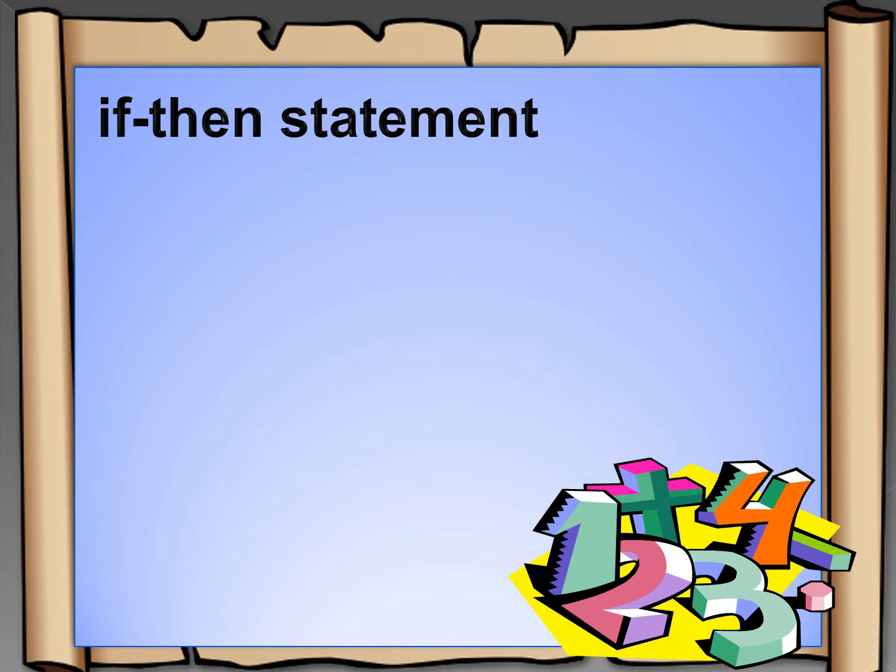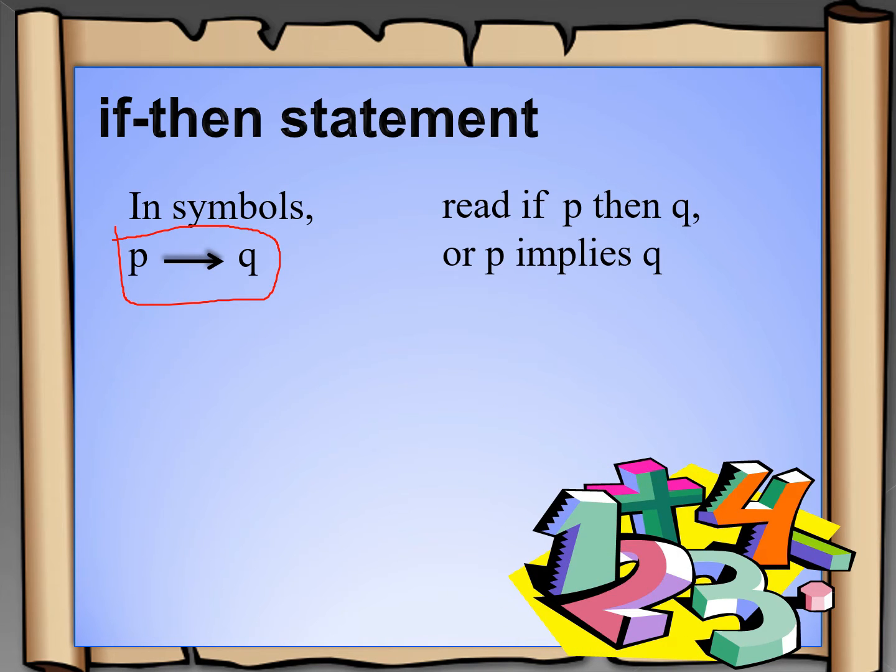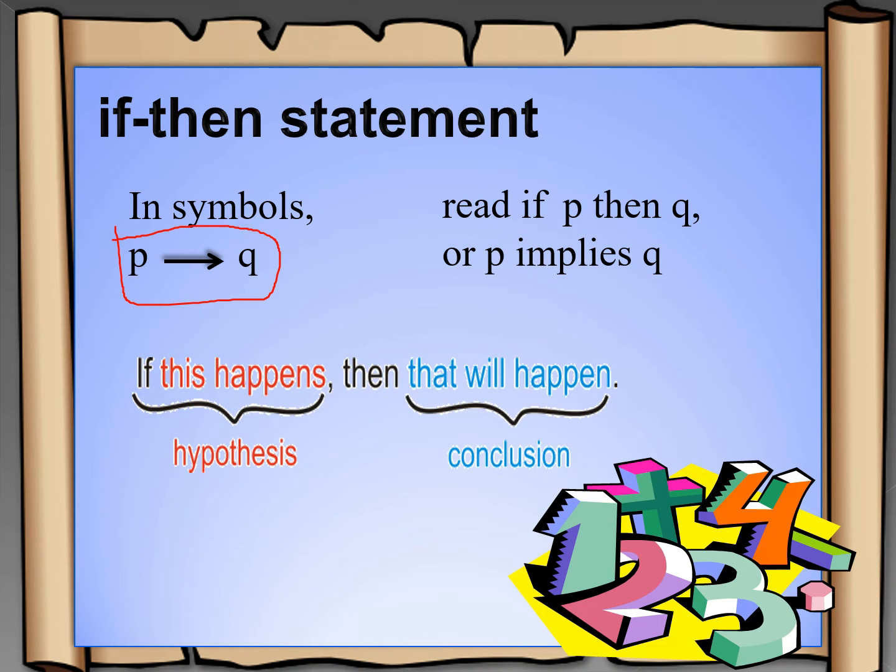If-then statement in symbols: we have P arrow Q. And it is read as if P then Q, or P implies Q. If this happens, then that will happen. The if-then statement is followed by our hypothesis, which is our P. And the then-then statement is followed by our conclusion, which is our Q.